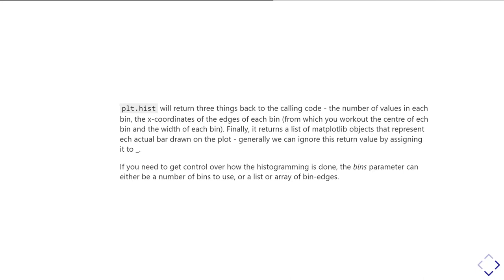The third thing it gives you back is a list of the actual things used to draw the bars in matplotlib. Generally speaking, that last parameter we don't need to worry about too much. Typically we end up assigning it to the underscore variable. In Python syntax, underscore is a legitimate name for a variable, and conventionally we use it to say we recognize that this function is giving us back a value here, but we're not interested in it. You can do quite a bit of control over the histogram by adjusting how the bins parameter is set. You can set it so that the bins are not uniformly spaced, or you can specify the number of bins, or you can just leave it up to decide what to do for you.